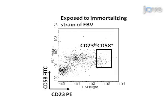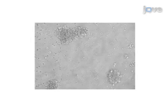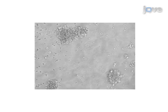Three to four days after infection with Epstein-Barr virus, a subpopulation of cells emerges that is marked as CD23 high, CD58 positive, and is predicted to undergo proliferation. CD23 high CD58 positive cells can be enumerated by flow cytometry as a predictor of successful outcome. Proliferating cells can be further identified micro- and macroscopically by the clusters of lymphoblastoid cell lines that form in successfully transformed cell cultures.